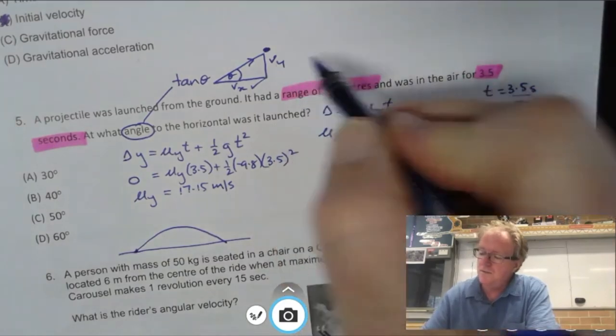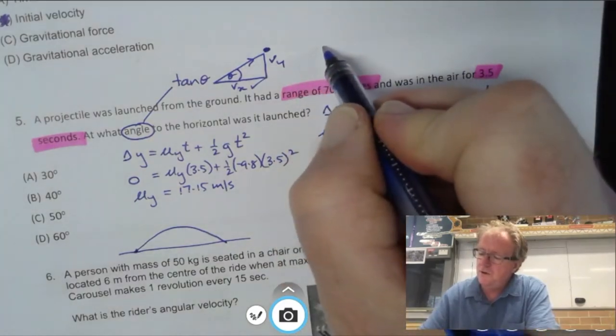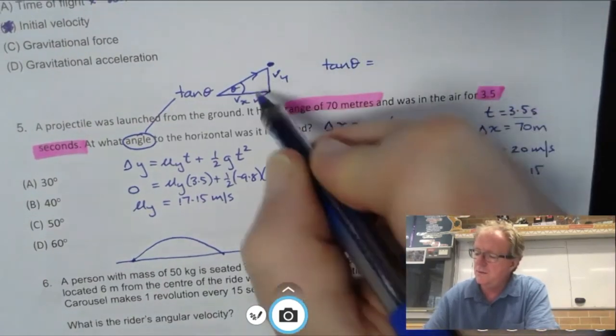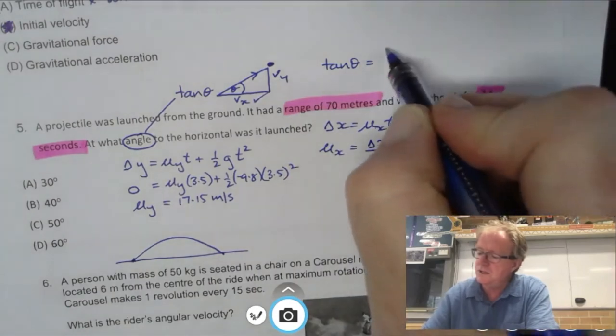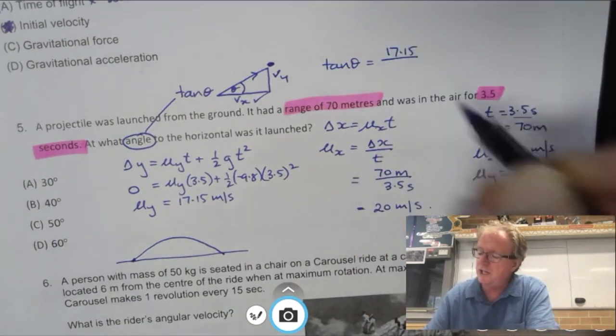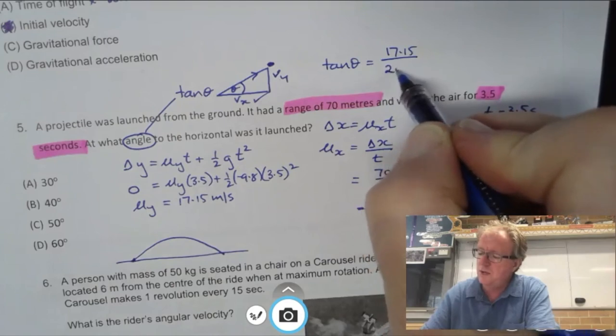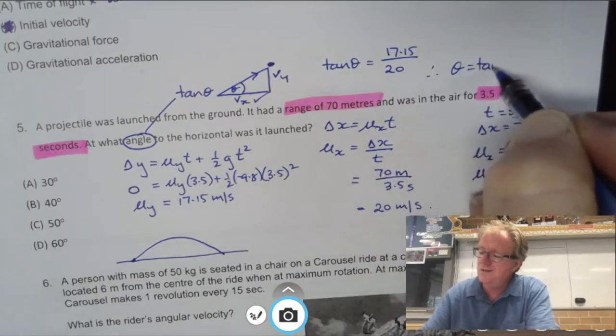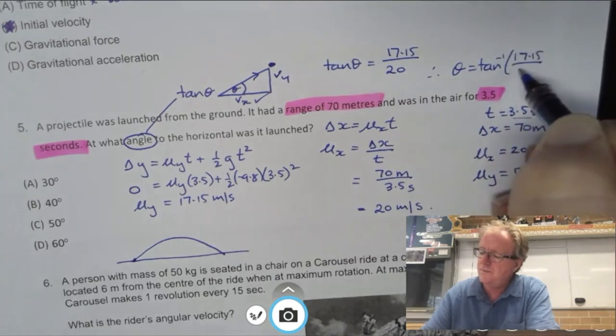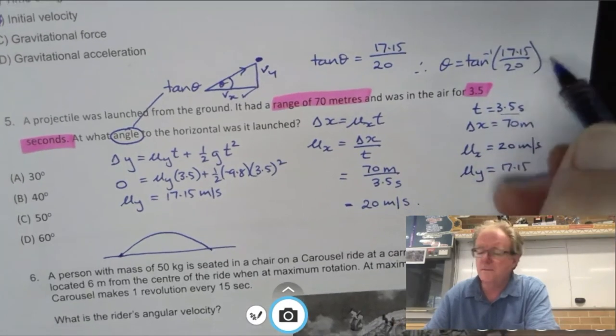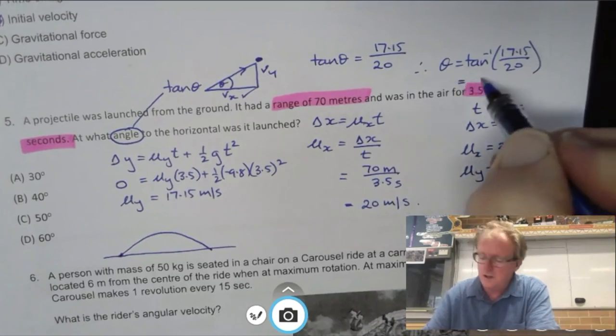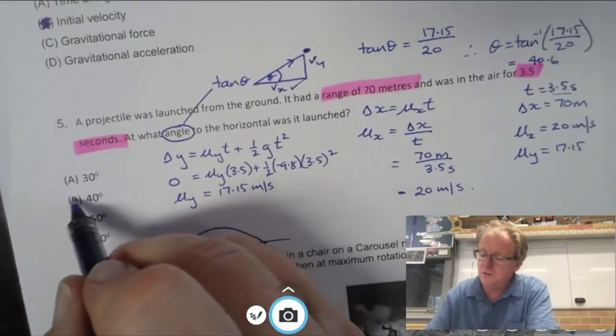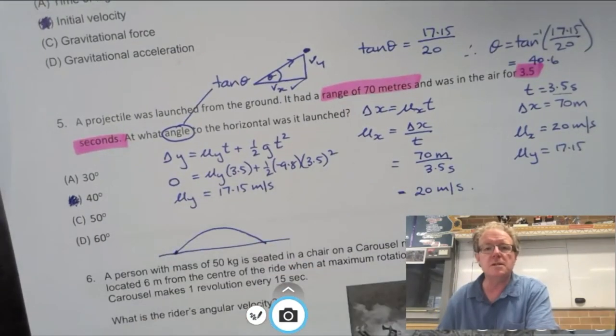So therefore tan theta is equal to vy, which is opposite, and vy is 17.15, divided by adjacent, which is ux, which is 20. Therefore, theta is equal to the inverse tan of that. And when you put that into a calculator, you get 40.6. Well, 40.6 is pretty close to 40. So there's your answer.